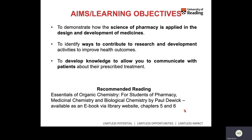People often ask about recommended reading for anything they can refer to to advance their knowledge in this area. I'd really recommend a book called Essentials of Organic Chemistry for Students of Pharmacy, Medicinal Chemistry and Biological Chemistry, authored by Paul Dueck. This is available as an e-book in the library — no need to buy it. I would refer you to chapters five and six for my course, but you'll find this book helpful in general for other aspects of the course this year and in further years.